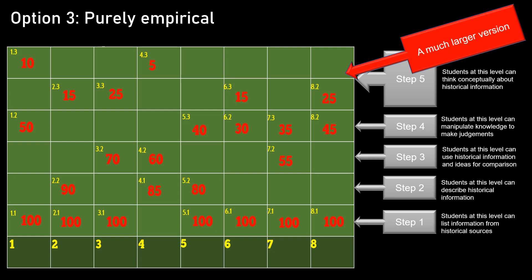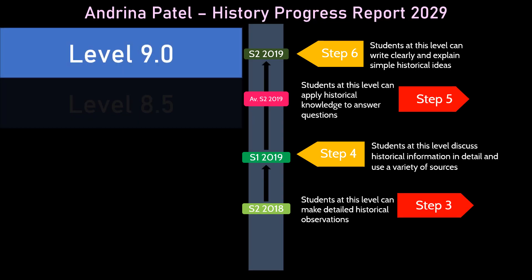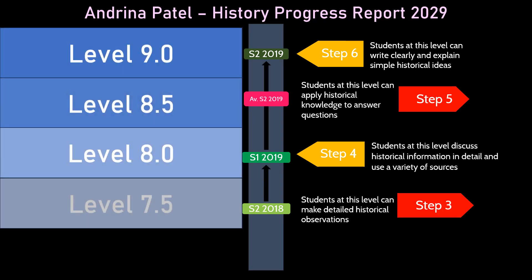You can have a combination where it's empirical within the year but hypothesized between years. Each color in the example represents a different year level, and we've leveled it that way. Or you can do a purely empirical one, assessing the entirety of your school — say Years 7 to 10 — on the same large progression or set of criteria, and then level it that way. On reports, you can report against the levels — calling them steps or levels — though most naming conventions have already been taken, which is a challenge.